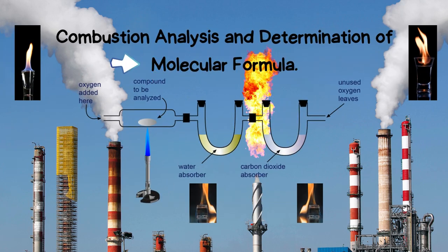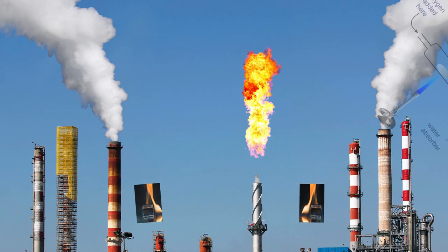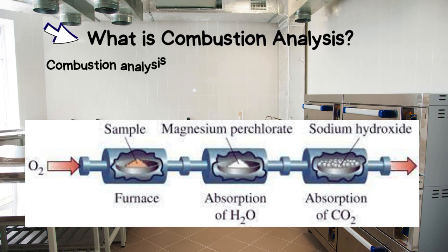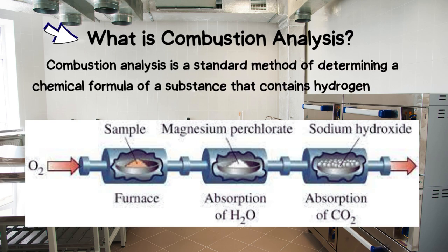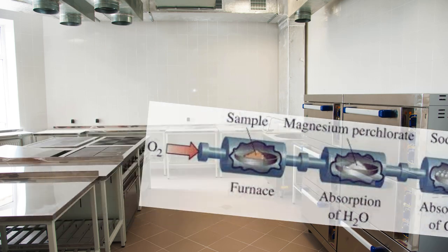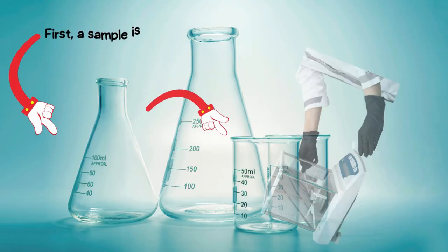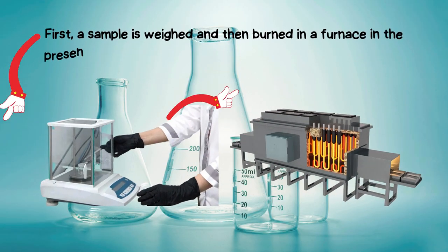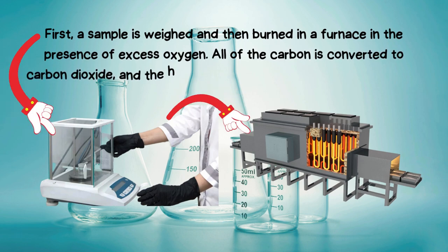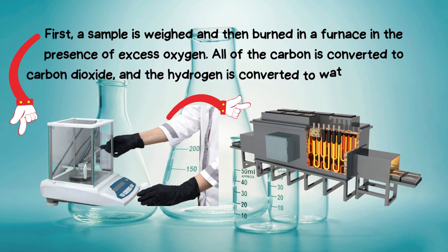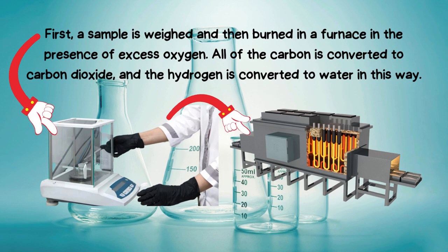Combustion Analysis and Determination of Molecular Formula. Combustion analysis is a standard method of determining a chemical formula of a substance that contains hydrogen and carbon. First, a sample is weighed and then burned in a furnace in the presence of excess oxygen. All of the carbon is converted to carbon dioxide, and the hydrogen is converted to water in this way.